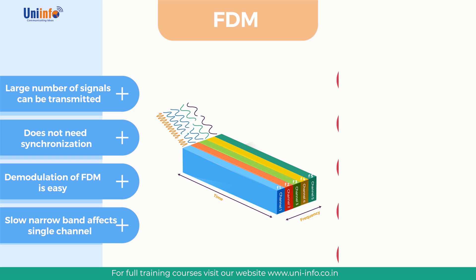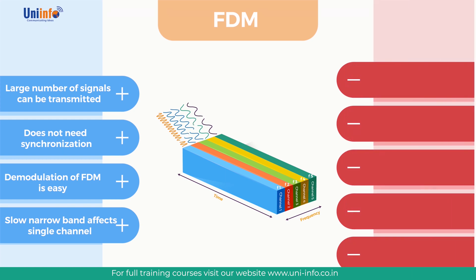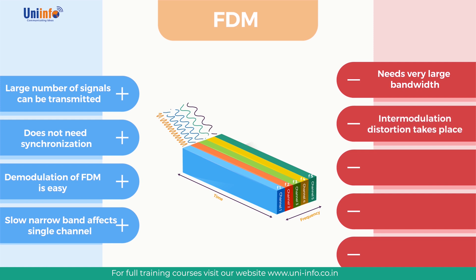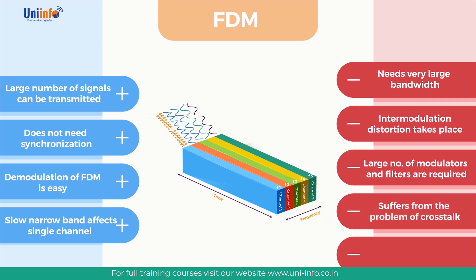Disadvantages of FDM: First, the communication channel must have a very large bandwidth. Second, intermodulation distortion takes place. Third, a large number of modulators and filters are required. Fourth, FDM suffers from the problem of crosstalk. Fifth, all the FDM channels get affected due to wideband fading.